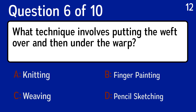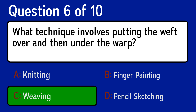Question 6: what technique involves putting the weft over and then under the warp? The correct answer is C, weaving.